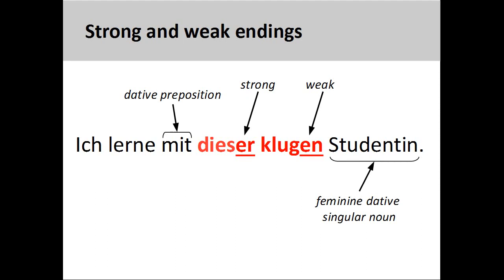Although the prior slides used primarily ein-words to show how weak and strong adjective endings work together, the same pattern also holds for der-words, such as 'diese' (this). Der-words are so called as they act like and take similar endings as definite articles. Here you can see how a strong adjective ending will be followed by weak adjective endings.